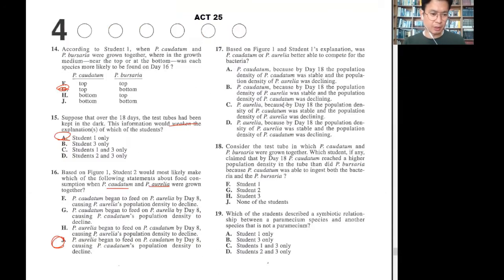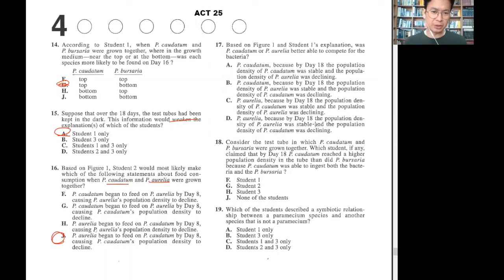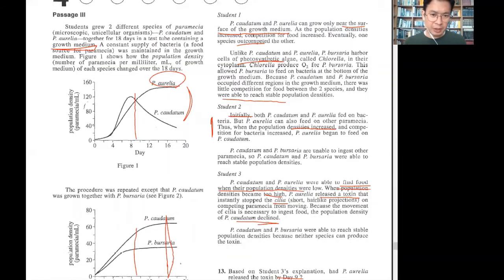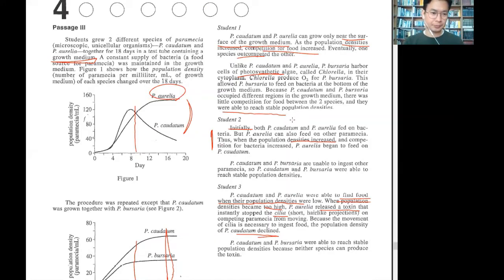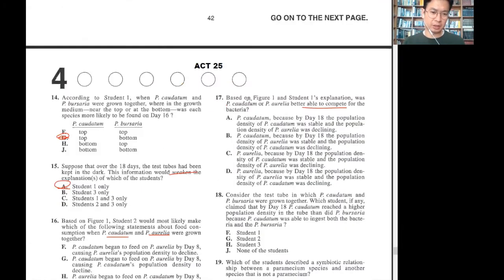Based on figure 1, student 1's explanation, better able to compete for bacteria. Which one is better compete for bacteria? It says density is up and competition up. Which one density is higher is aurelia. So D.